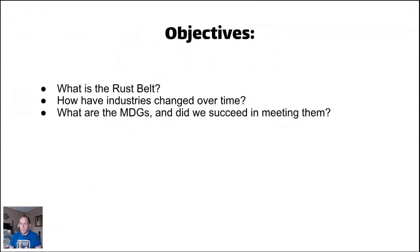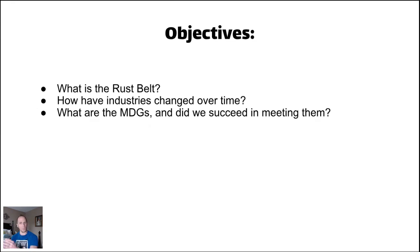We're going to look at the Rust Belt states and be familiar with where we're talking about in the US Rust Belt. We'll spend time talking about how industries have changed over time, then finish up looking at the MDGs or Millennium Development Goals, which ended in 2015. We'll discuss whether we succeeded in accomplishing those goals and take a quick look at the Sustainable Development Goals, which replaced them and go into effect until 2030.